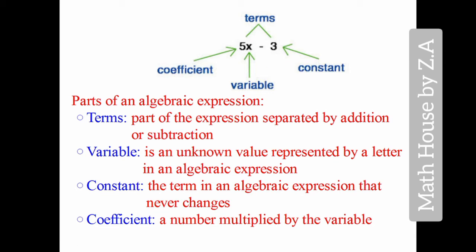Terms mean part of an expression separated by addition or subtraction. Variable is an unknown value represented by a letter in an algebraic expression. This means any letter from the alphabet - a, b, c, x, y, z, l, m, n - any alphabet you can use as a variable.